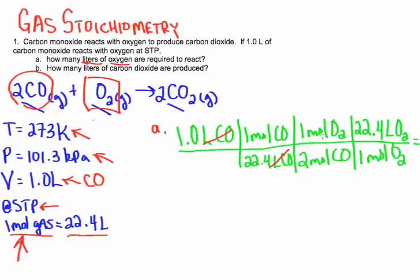Next, we use the mole ratio from the balanced equation. Two moles of carbon monoxide for every one mole of oxygen gas. We set it up accordingly so that we get moles of carbon monoxide to divide out. Make sure you don't cross off your two there. And likewise, we're trying to return two liters of oxygen. So, we need moles of oxygen to divide out.